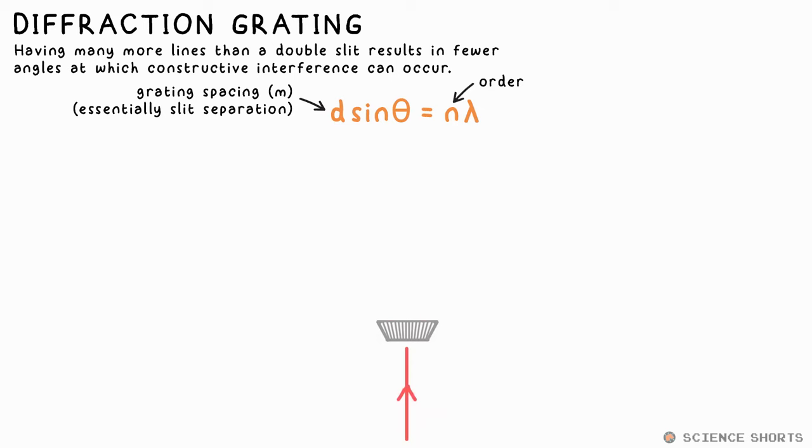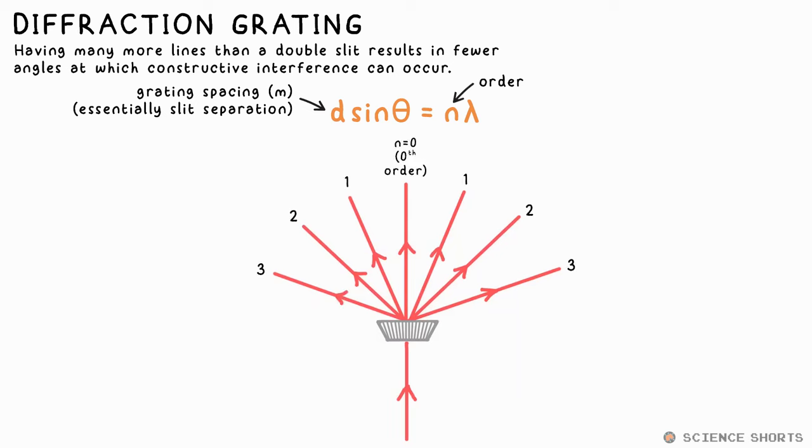If you replace Young's double slit with a grating of very small lines separated by line spacing little d, you only get constructive interference at a few points very far away from the central max. We call these orders instead of fringes. The central max is the zeroth order. As we're dealing with large angles, we can't use Young's double slit equations, so we use the more accurate equation, n lambda equals d sine theta. Often you'll be given the line or grating spacing in lines per millimetre, which you need to turn into metres, essentially metres per line, is the reciprocal, before it can go into the equation.